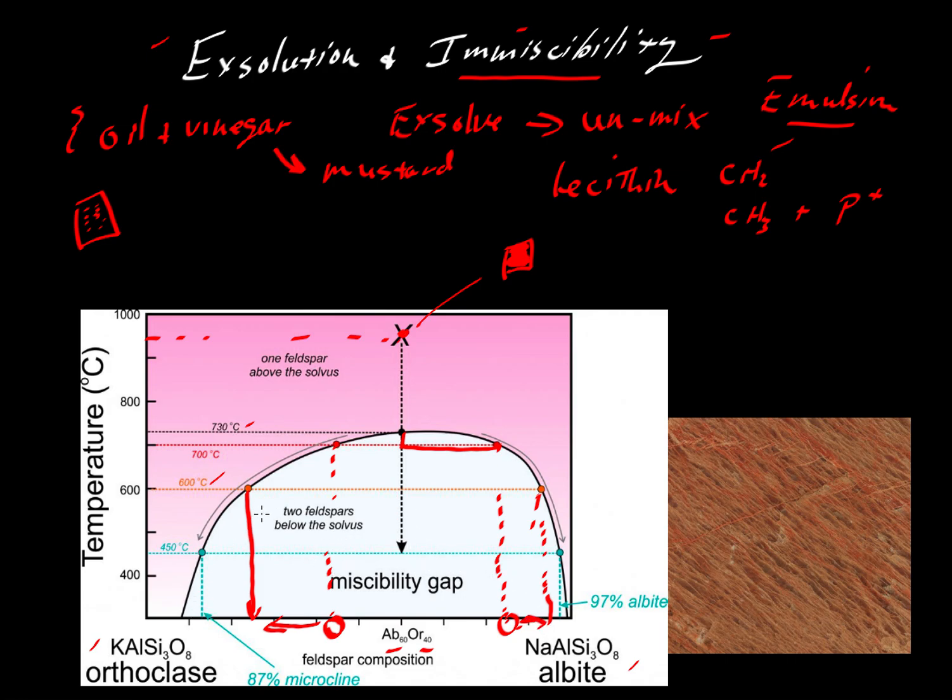So notice that due to the shape of this curve, that curve would be referred to as a solvus. Then due to the shape of that curve, we can see that the lower the temperature, then the greater this miscibility gap, the way it's been termed here. The greater the degree of chemical separation between the potassium-rich and the sodium-rich components in the orthoclase, or excuse me, the alkali feldspars structure. And we can see an example of that over here to the right.